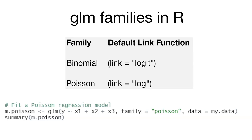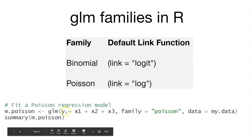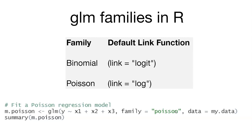Here's an example where we might do a Poisson regression, which we'll discuss in the next lecture. If we have three variables x1, x2, and x3 predicting y, we can specify family as Poisson if we think the data are distributed in Poisson form. By simply changing the family, you can change the underlying distribution used in generalized linear models. Understanding how your data are distributed will help you immensely when fitting generalized linear models.